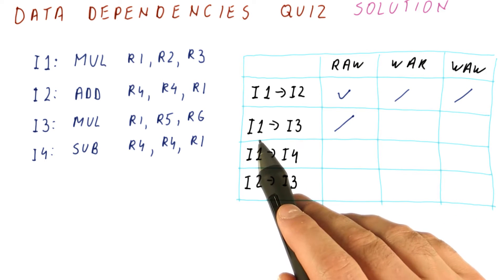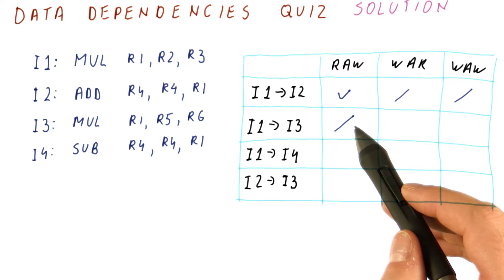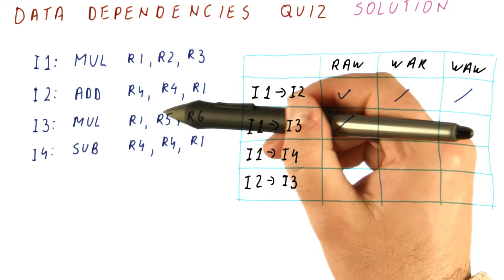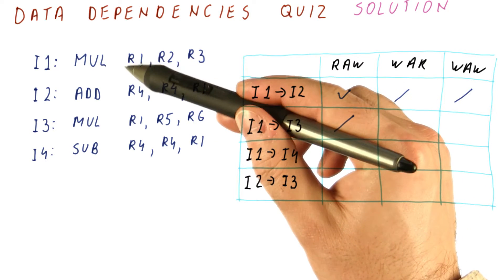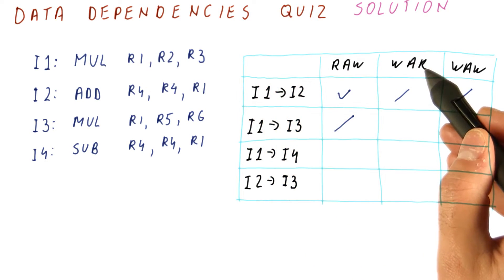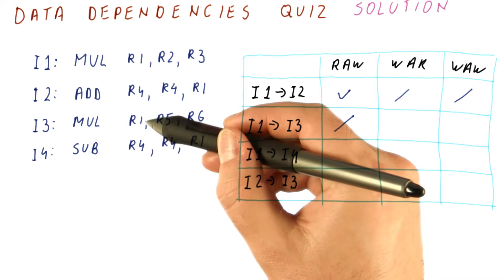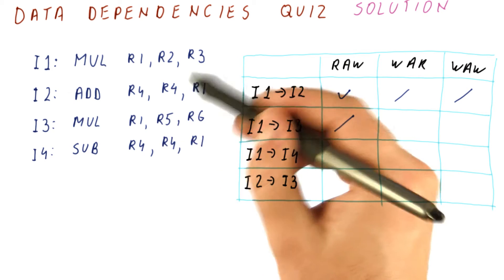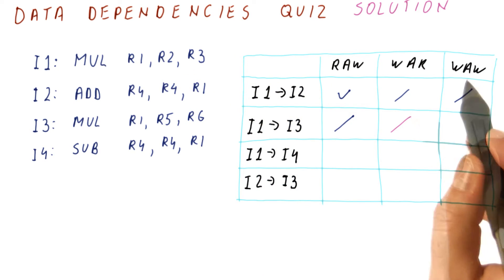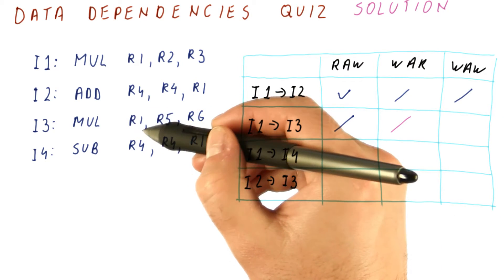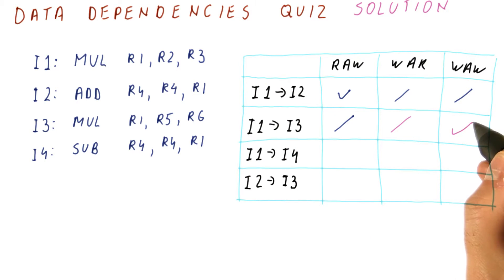Let's start with I1 to I3. We already know there is no read after write dependence. That is because I3 doesn't use the R1 value produced by I1. Write after read would mean that I3 is writing a result into a register that was supposed to be read by I1, which is not true. Write after write would mean that I3 is overwriting the result produced by I1, and that is true.